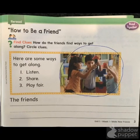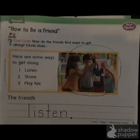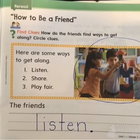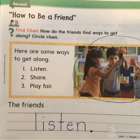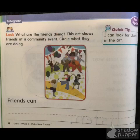In the box it says here are some things to get along: number one, listen; number two, share; and number three, play fair. Underneath that is a sentence that starts: 'The friends blank.' There's a blank line and we need to write something. We're thinking about what the friends can do, and I wrote the word listen. You're going to copy that word — L-I-S-T-E-N — so now it'll be a sentence: 'The friends listen.' After you write the word listen, you need to put a period. A period is a little dot that ends your sentence. You can pause this if you need to finish the word listen.